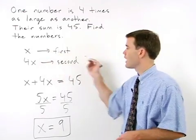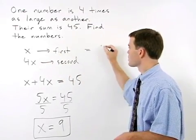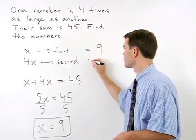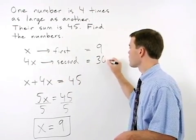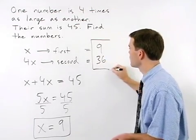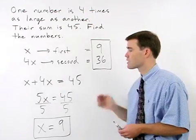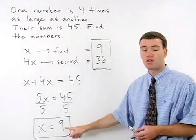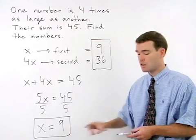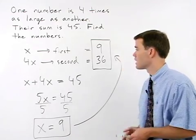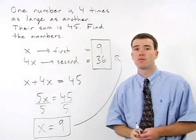So our first number x equals nine. And our second number 4x equals thirty-six. So our answers to this problem are nine and thirty-six. A common mistake would be to say that your answer is just nine. Make sure you go back up to where you labeled your variables and give both answers to the problem.